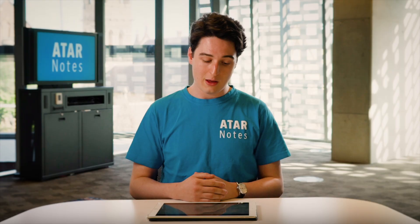However, a number of the rules have exceptions. There are two exceptions that you need to know: the PMS exception and the CASTROBEAR exception. PMS stands for plumbum — which is the same as lead — mercury, and silver. And CASTROBEAR stands for calcium, strontium, and barium. As you can see, these exceptions apply in particular circumstances.